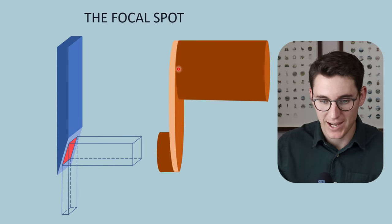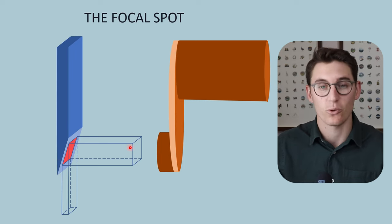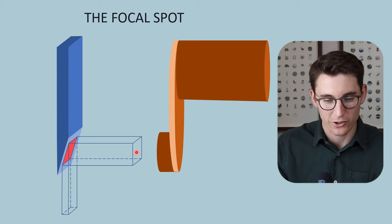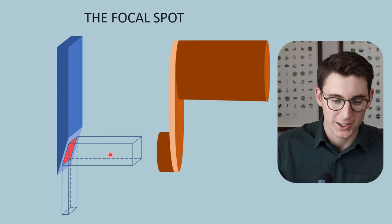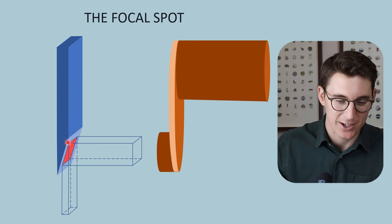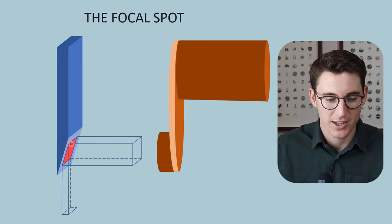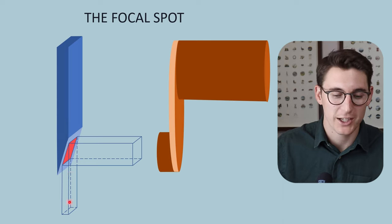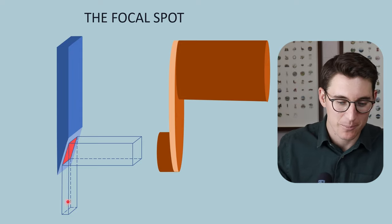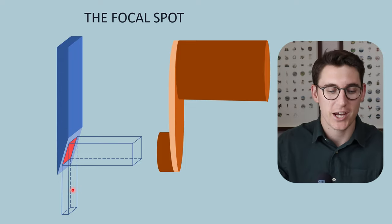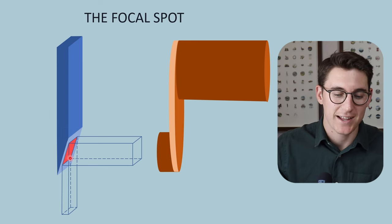Looking at a simplified diagram, we have our cathode which has produced electrons being accelerated towards our anode — I've used just the bottom half of the anode here. The first cuboid going from the cathode towards the anode represents our electron beam, also called the bombarding electron beam. Where those electrons strike the anode, that red region is known as the actual focal spot — where x-rays and heat are produced. The x-rays then head out towards our patient, represented by our effective focal spot.